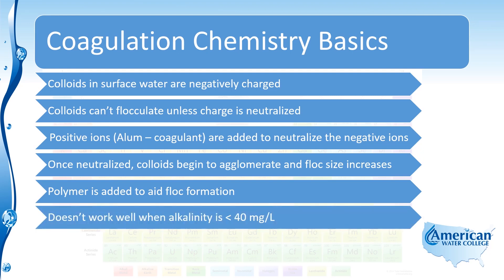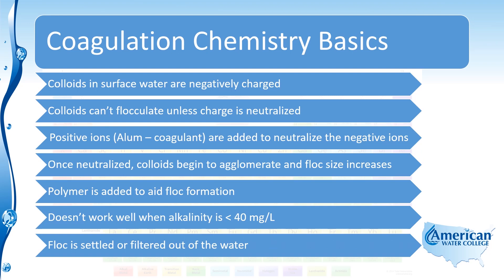Aluminum sulfate coagulation and ferric sulfate coagulation don't work well when the alkalinity is less than 40 milligrams per liter. The reason is that aluminum sulfate and ferric sulfate combine with the minerals that make up the alkalinity in the water and form a floc. Alum forms aluminum hydroxide, which looks like a snowflake in the water. That aluminum hydroxide floc then acts to neutralize the colloids and attract them, forming even larger floc. So aluminum sulfate and ferric sulfate require alkalinity in the water to be effective. Once the floc has formed to a size large enough to settle out, it is settled in the sedimentation basin or filtered out in the filtration process.